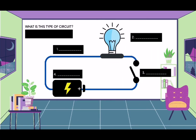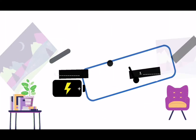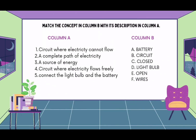In this learning task, you need to label the parts of a circuit, and you need to identify what type of circuit is being shown in the diagram. You can pause the video while answering the questions. For the next task, you need to match the concept in column B with its description in column A. You can pause the video while answering the questions.